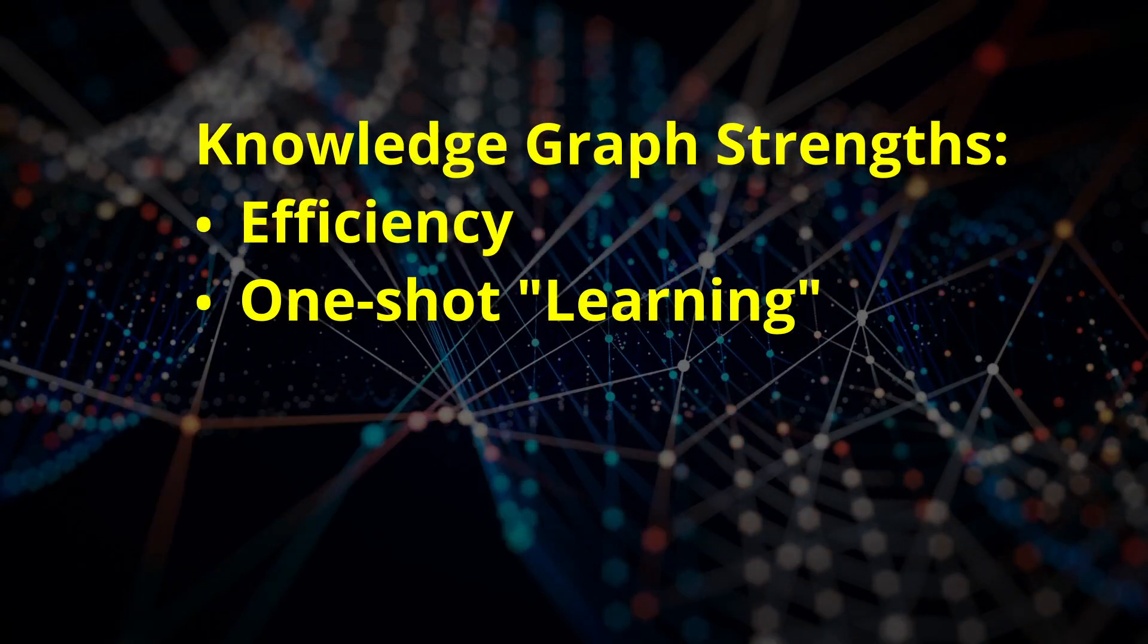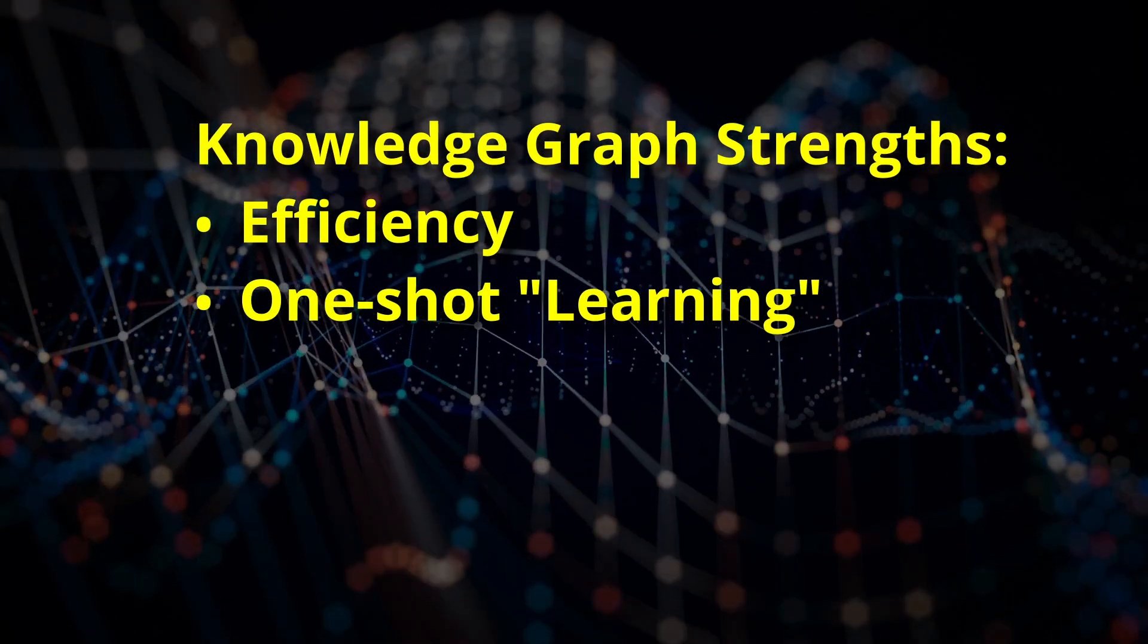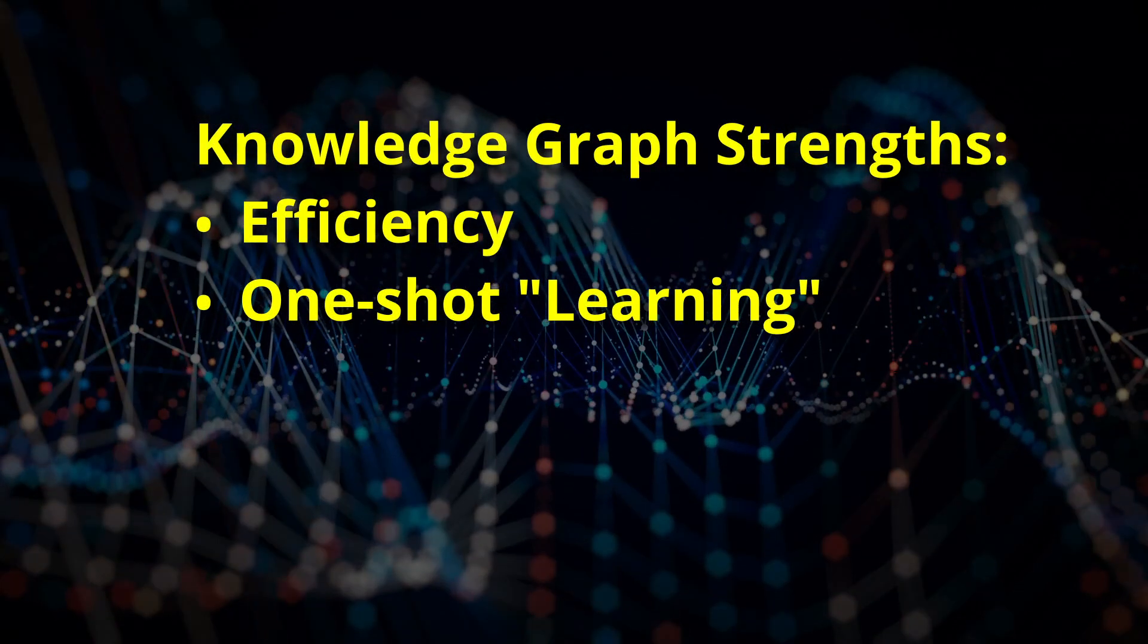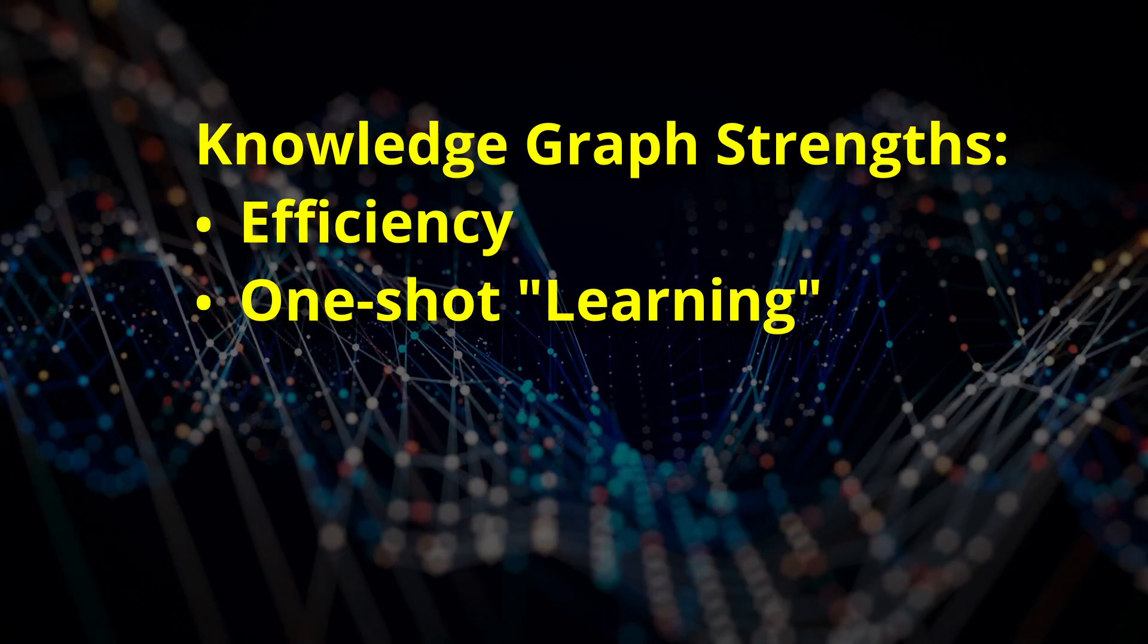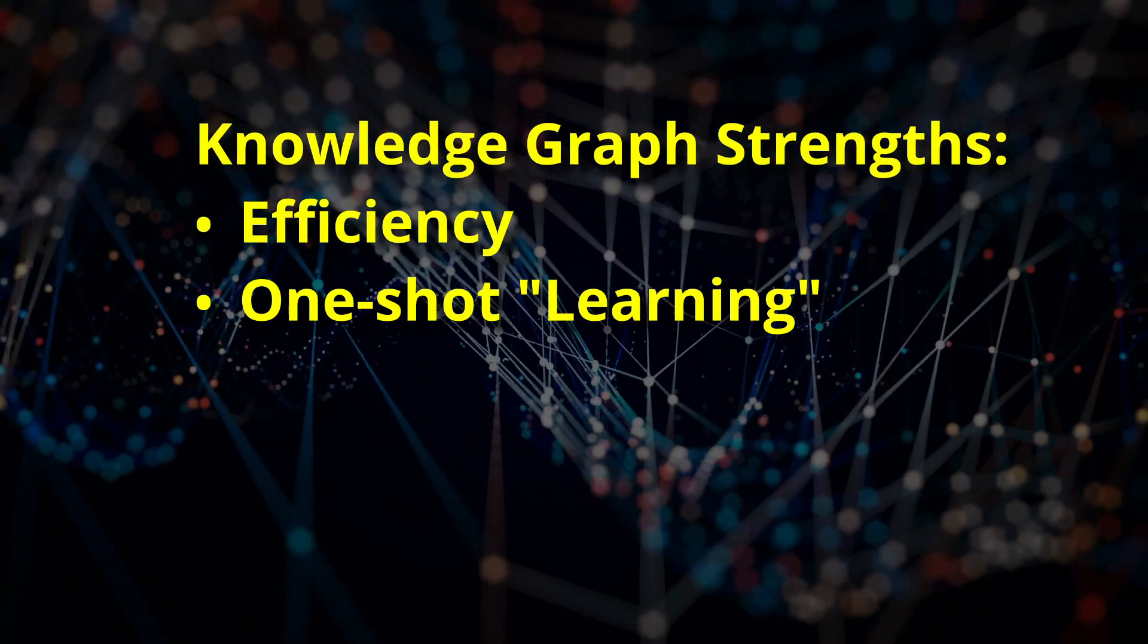Unlike neural networks, which require thousands or even millions of examples, a Knowledge Graph can instantly incorporate new facts. It doesn't need retraining. The graph's structure is not predefined, so you can add, modify, or delete nodes and relationships as needed.